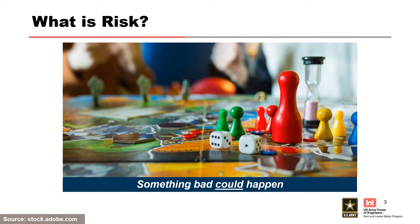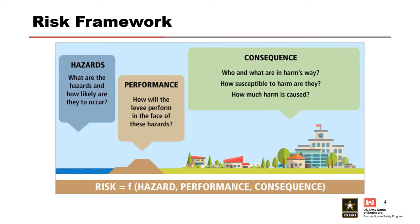We also talk about risk in mathematical terms: it's likelihood times consequences, which helps you get an understanding of an expected annual consequence. When we break it down into more technical terms, we have three major components: the hazards — what are the hazards and how likely are they to occur? From an engineering perspective, how would you portray hazards mathematically to feed the risk equation?